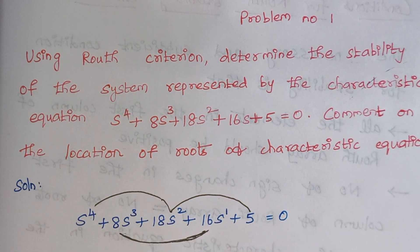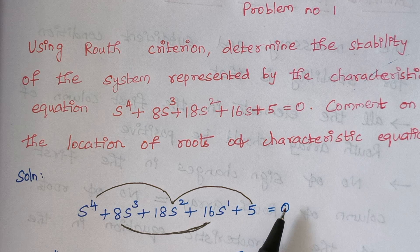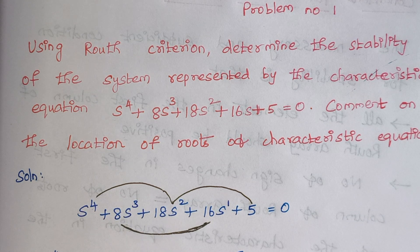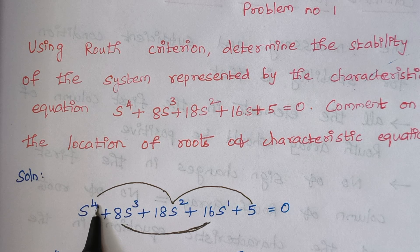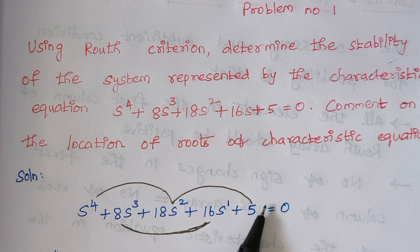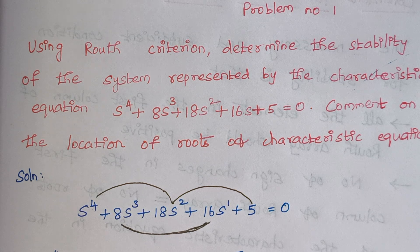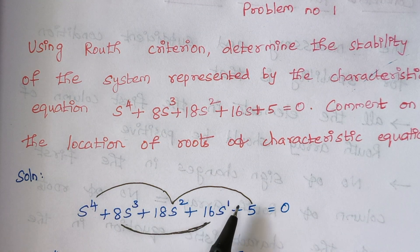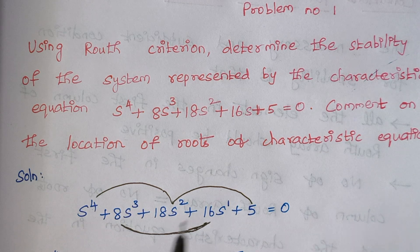The first step is to write the characteristic equation and check that the powers are present in descending order, that is from bigger to smaller. The maximum power here is 4, then 3, 2, 1, and finally 0. If any one term is missing, you have to write that term as 0. So check that all powers are present in descending order.